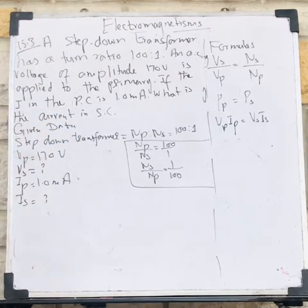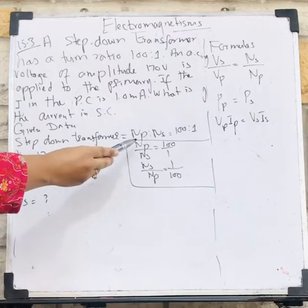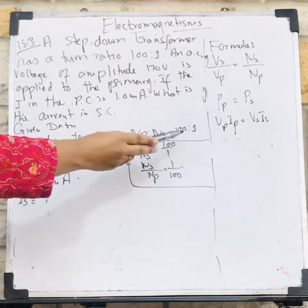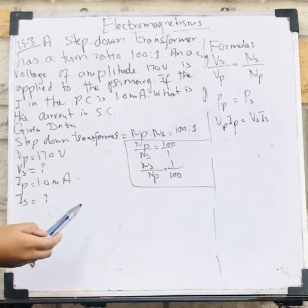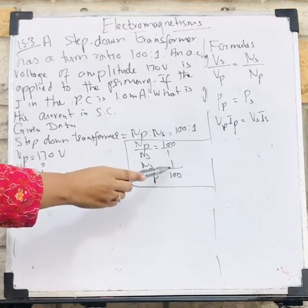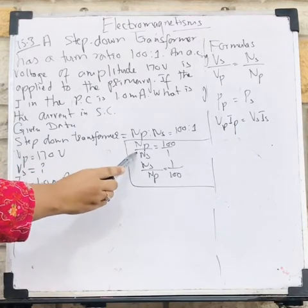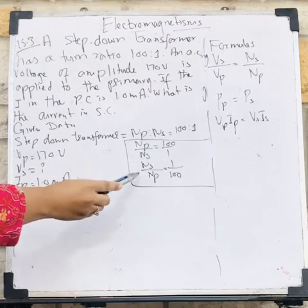Then we will see which formulas are suitable for our calculation. It is a step-down transformer, so Np ratio Ns is equal to 100 ratio 1. It means Np divided by Ns is equal to 100 divided by 1, or I can say Ns divided by Np is equal to 1 divided by 100. If my demand is Np by Ns, then I can write 100 ratio 1. If my demand is Ns divided by Np, then I can write like this.